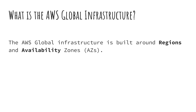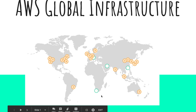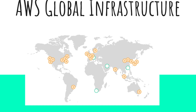The AWS infrastructure is built around regions and availability zones. If we go back to this picture, you can see that each circle represents a region. Each orange circle represents a region that's already present, and a green circle represents an upcoming region around the world.